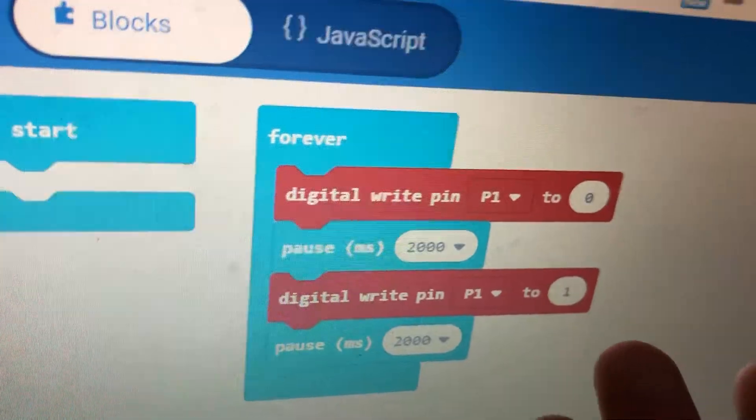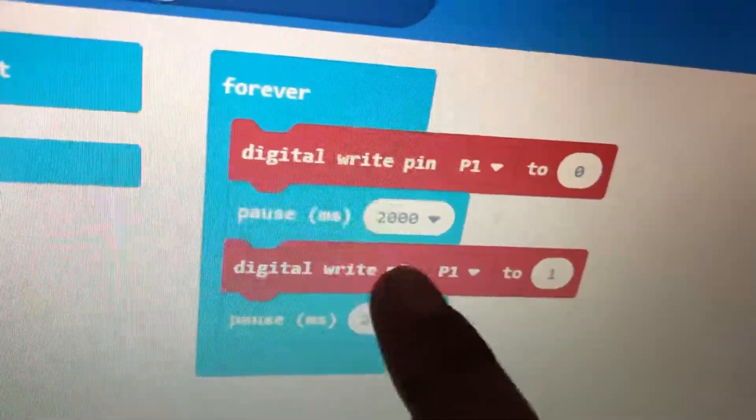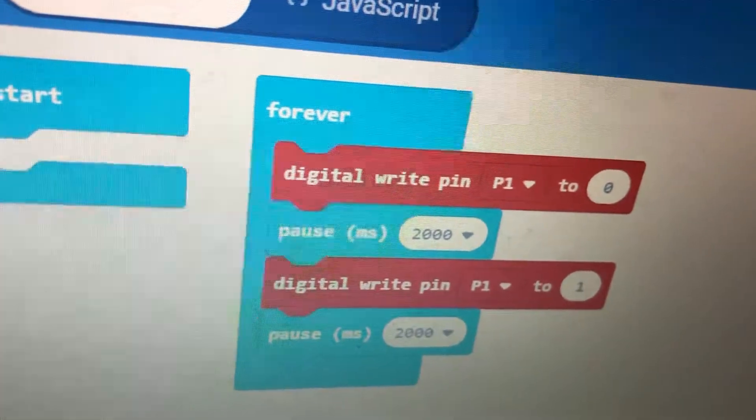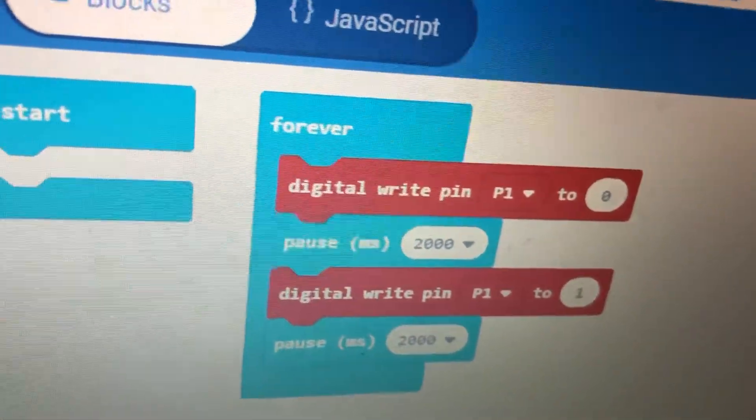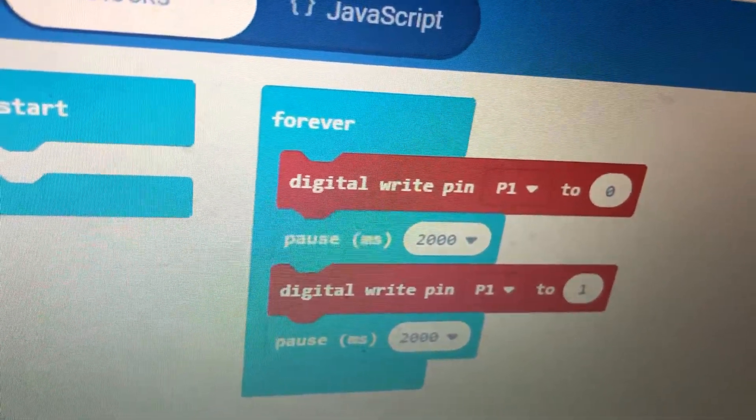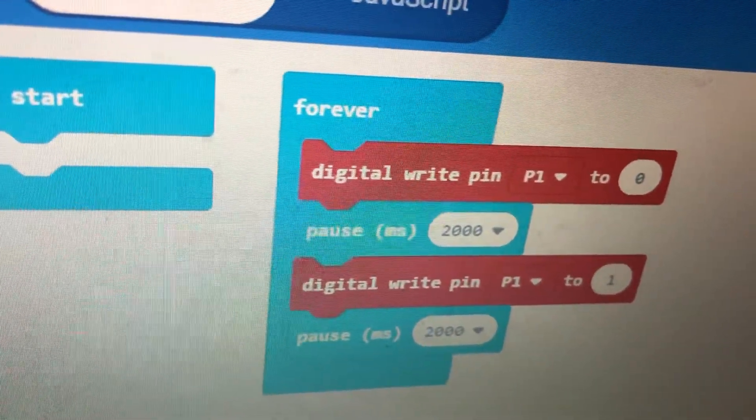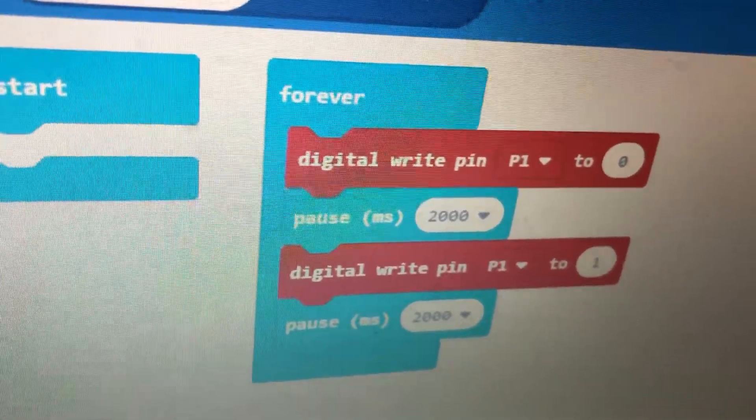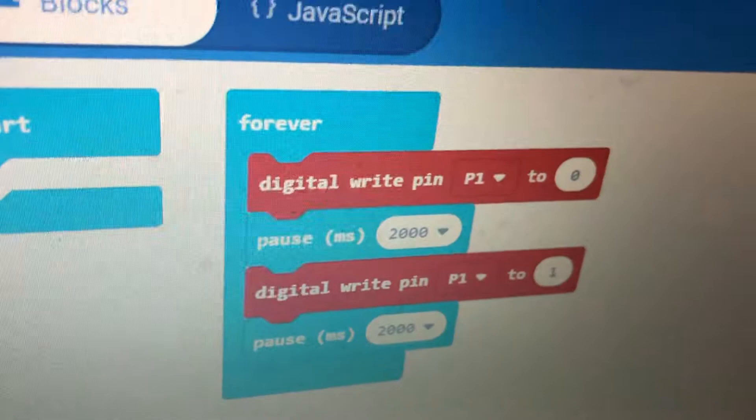Then we write digital write pin P1 to 1, which means we're giving it some electricity now, and our motor will start working. Then another two seconds, and this will keep on repeating. Now I'm going to show you it working again.